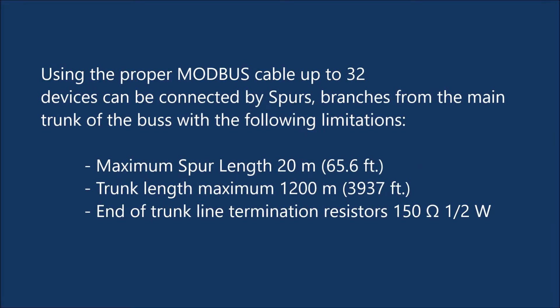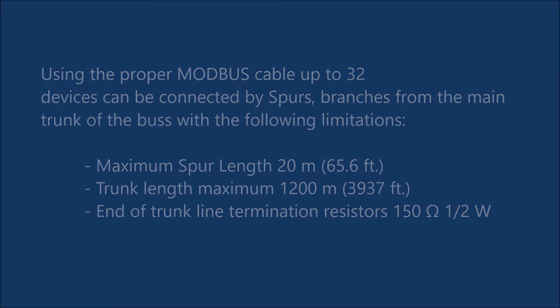Using the proper Modbus cable, up to 32 devices can be connected by spurs — branches from the main trunk of the bus — with the following limitations: maximum spur length 20 meters (65.6 feet), trunk length maximum 1,200 meters (3,937 feet), and end-of-trunk line termination resistors of 150 ohms at 1.5 Watt.